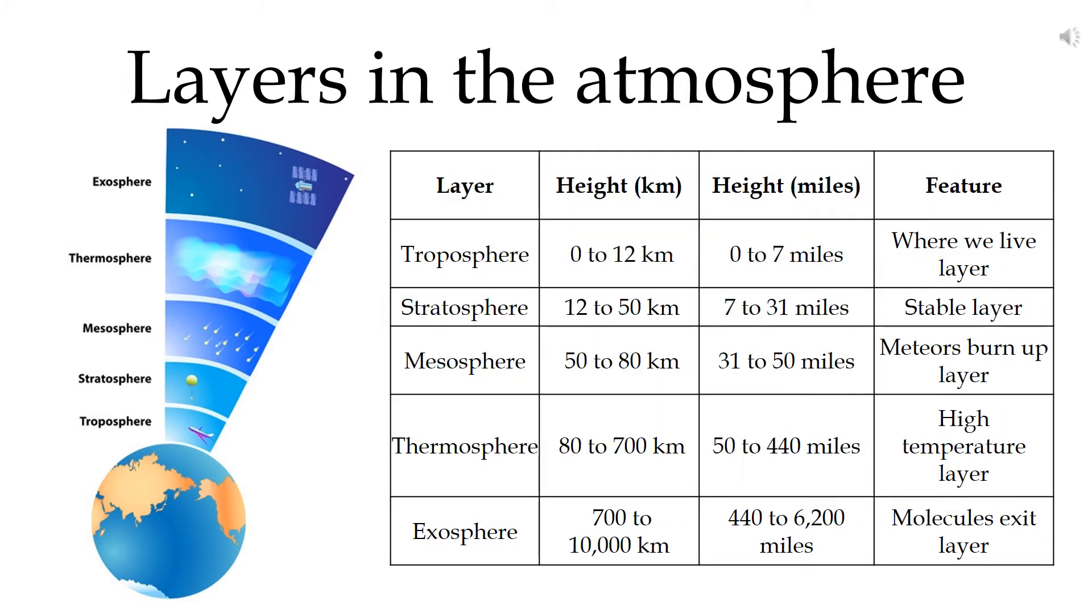Above the thermosphere is the exosphere, which is the final layer in the atmosphere. It is between 700km and 10,000km above the Earth's surface. The exosphere is where most of the satellites orbiting Earth are.